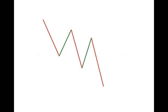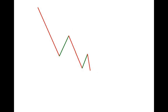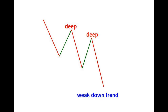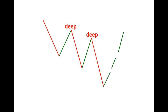It works the same way in a downtrend — lower highs, lower lows. When you have a deep retracement on the bounce, that's a weak downtrend. A weak downtrend is good for picking lows — if you have some zone that you think will bounce, having a weak downtrend into that zone confirms that it's a good place to go long.